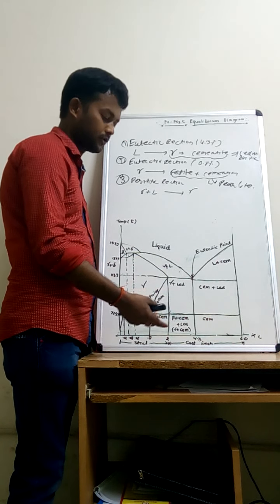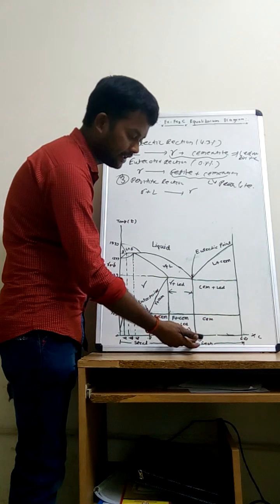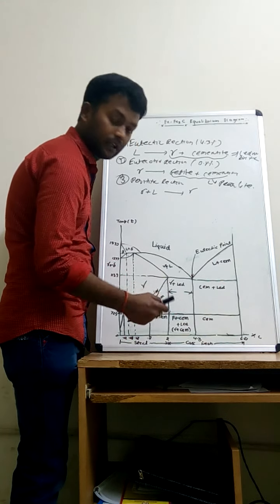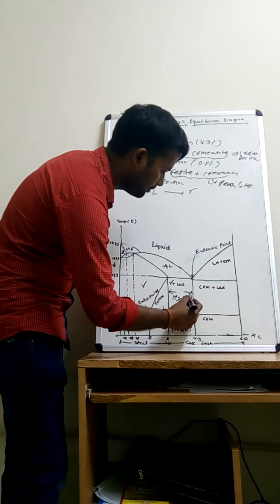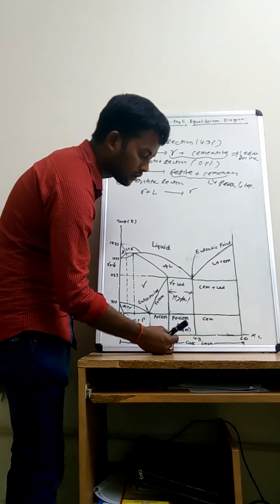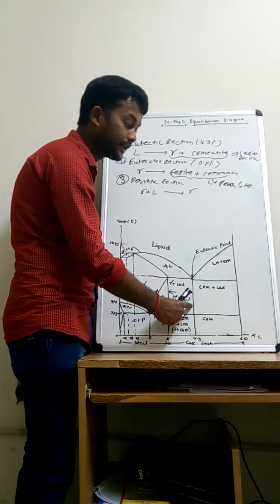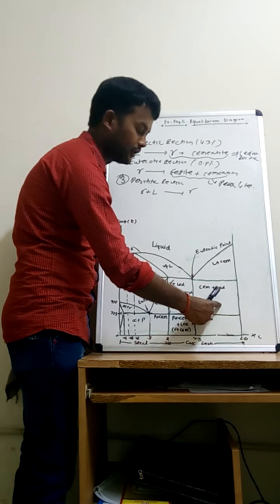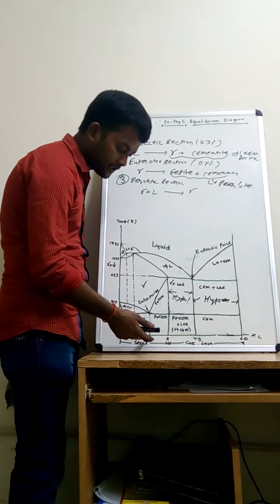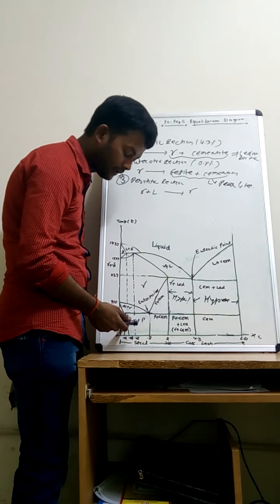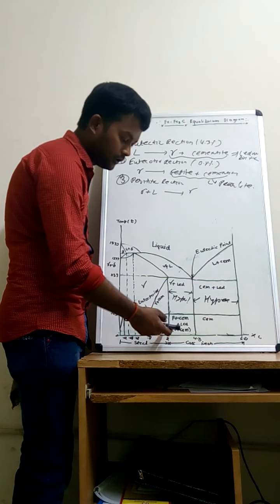In the eutectic region, if the percentage of carbon is less than 4.3% it is called hypoeutectic, and if more than 4.3% it is called hypereutectic. For steel, if the percentage of carbon is more than 0.8% and less than 2%, it is called hypereutectoid steel.